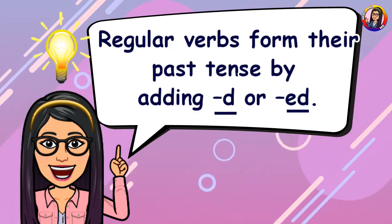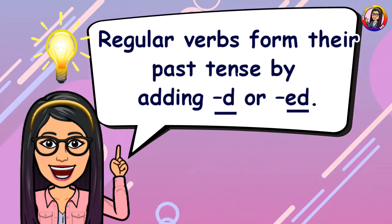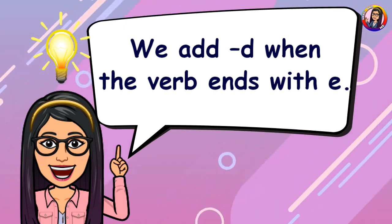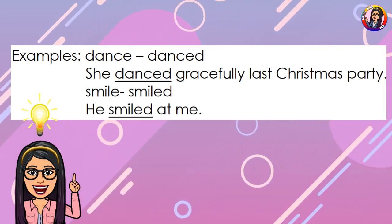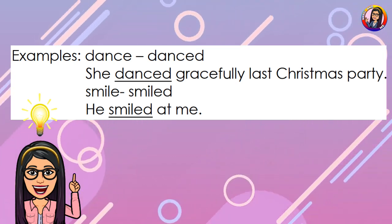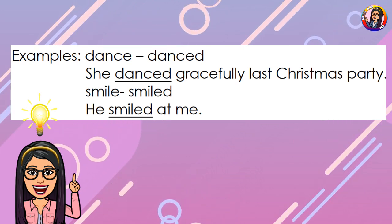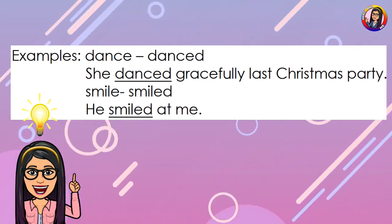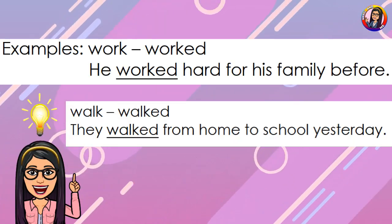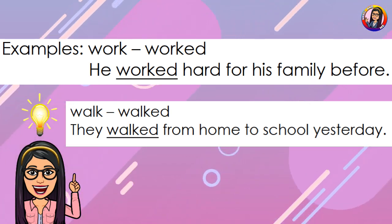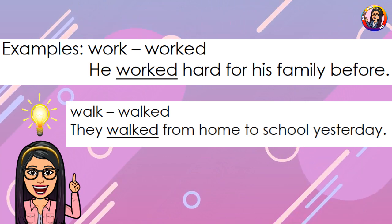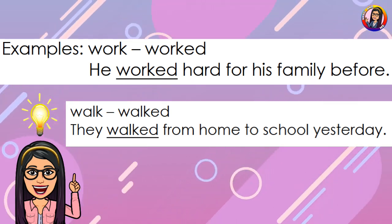Regular verbs form their past tense by adding D or ED. We add D when the verb ends with E. Examples: 'dance' becomes 'danced' — She danced gracefully at the last Christmas party. 'Smile' becomes 'smiled' — He smiled at me. We add ED when the verb ends with a consonant. Examples: 'work' becomes 'worked' — He worked hard for his family before. 'Walk' becomes 'walked' — They walked from home to school yesterday.